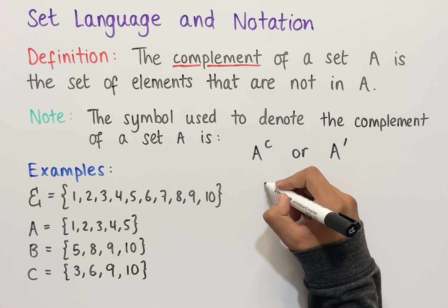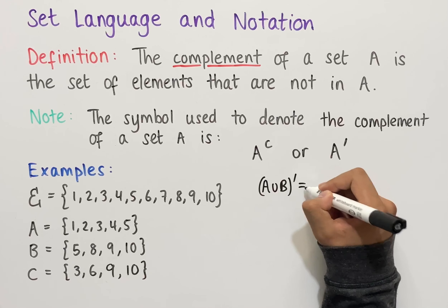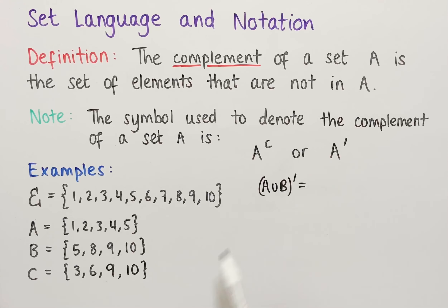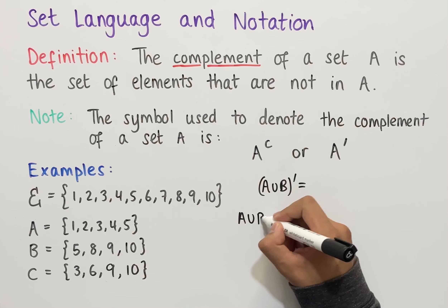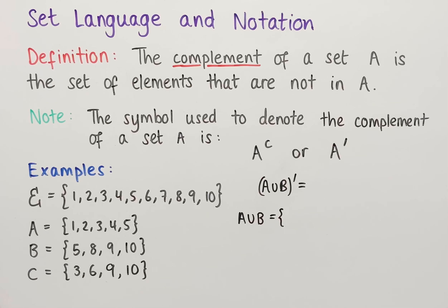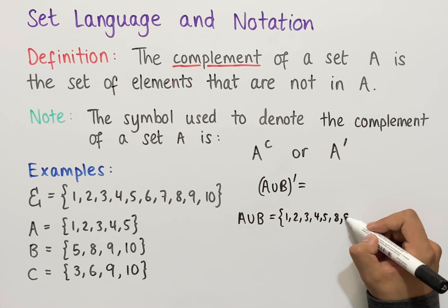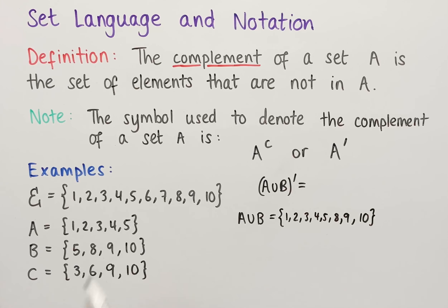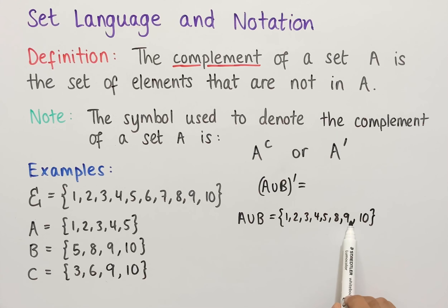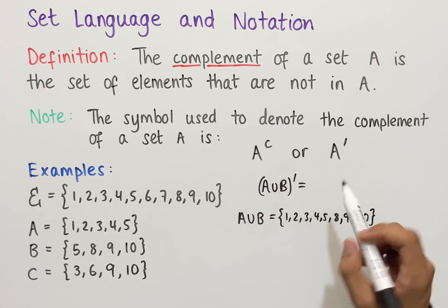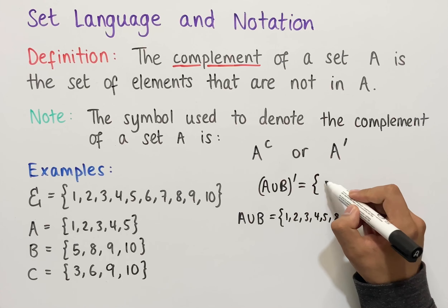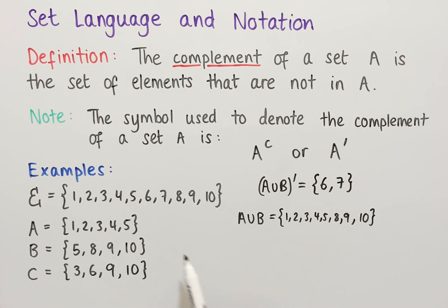Let's work out some other sets too. If we had A union B all complemented, we first work out A union B — all elements in A, in B, or in both. That gives us 1, 2, 3, 4, 5, 8, 9, and 10. To work out the complement of A union B, we need all elements not in this set but in the universal set. So A union B complement equals the set containing 6 and 7, since 6 and 7 are in the universal set but not in A union B.